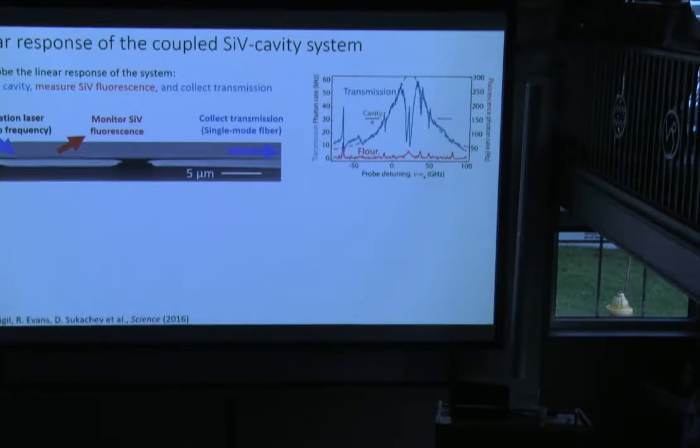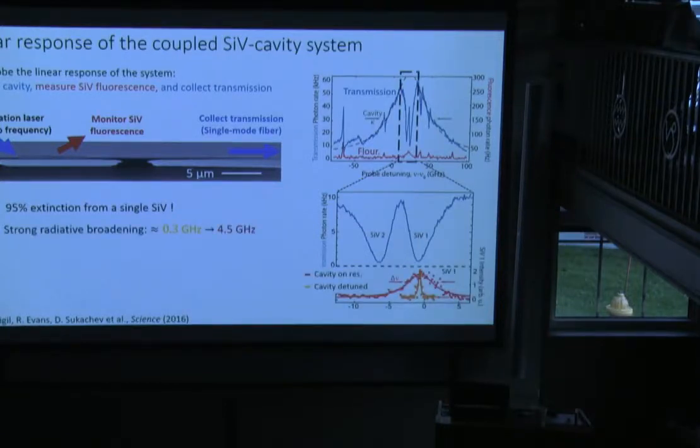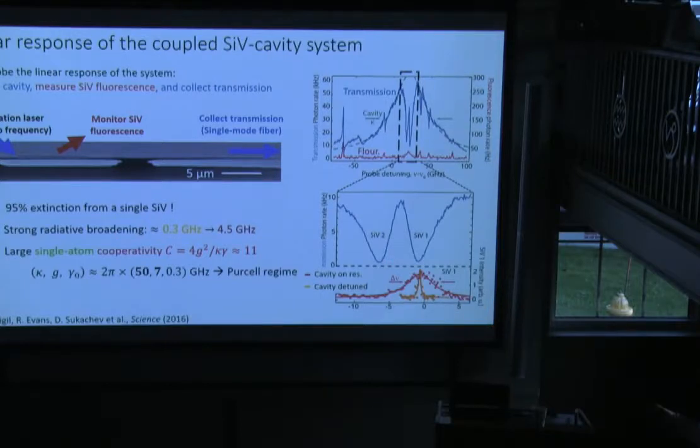Let's zoom in on this region of the plot. Here we can see that two SiVs which are strongly coupled to the cavity - each atom can extinguish the transmission light by almost 95%, almost 100%. If you look at the fluorescence, when the cavity is detuned, the linewidth is about 300 megahertz. When the cavity is on resonance with the atom, the Purcell-broadened line is more than 4 gigahertz. This corresponds to a cooperativity of 11 between the SiV and the cavity.